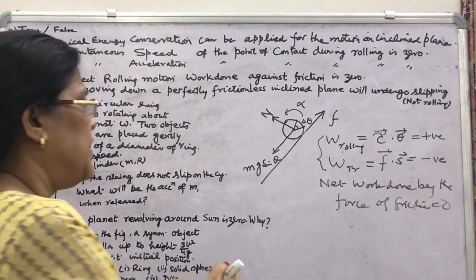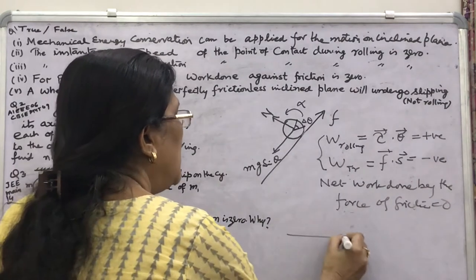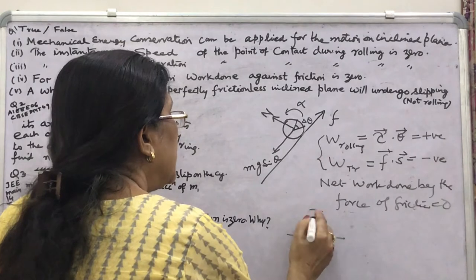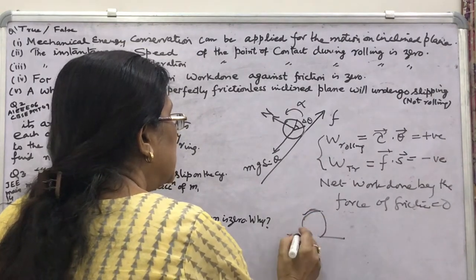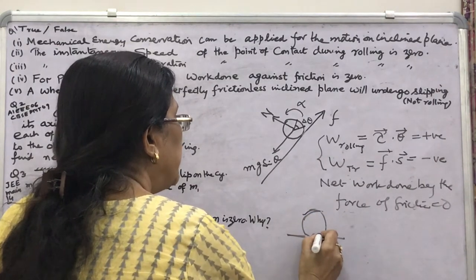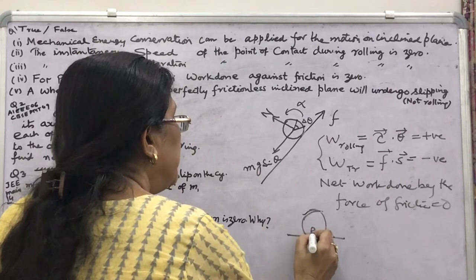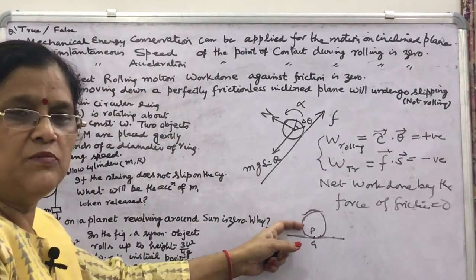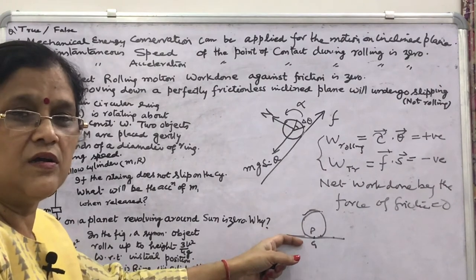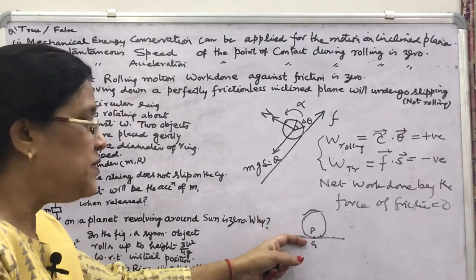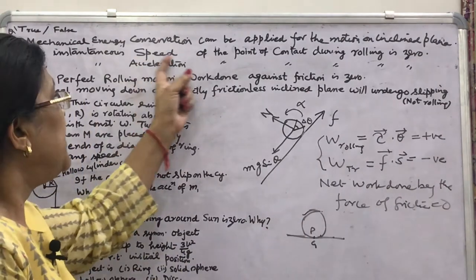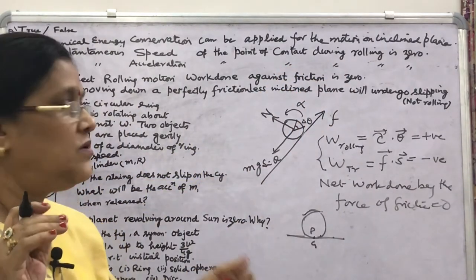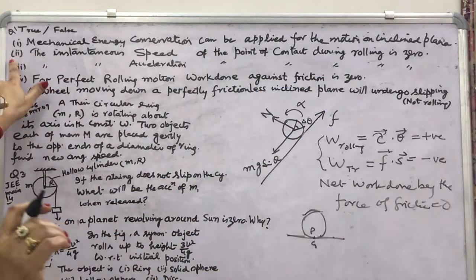We have also seen in planar motion that the lowermost point P of the body moving along the ground G has no relative motion, no slipping, and zero displacement. So the speed of the point of contact during rolling is zero. This part is also TRUE.